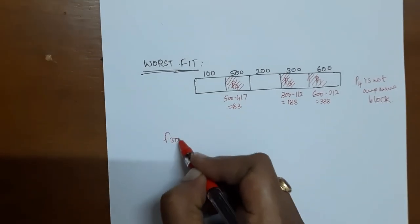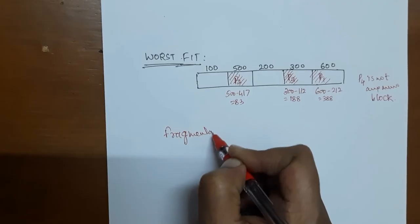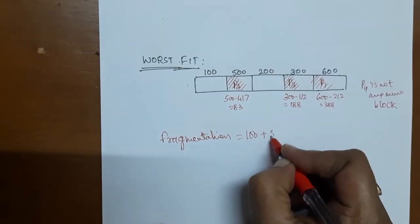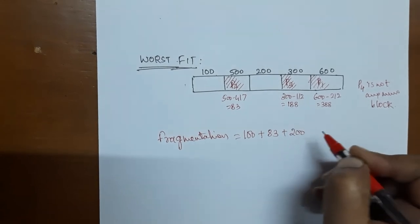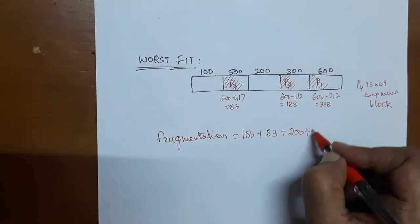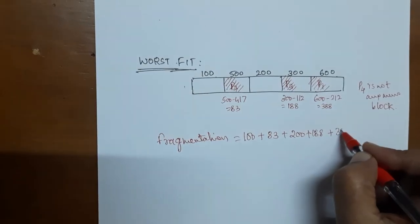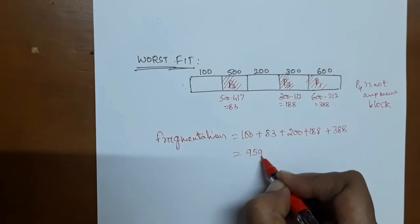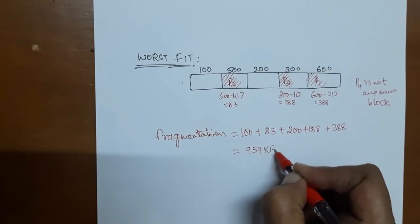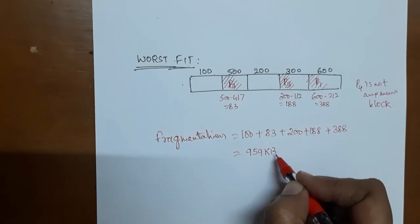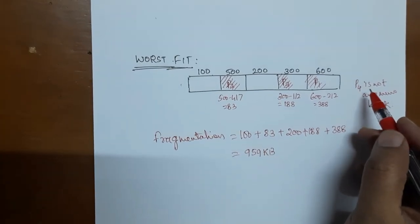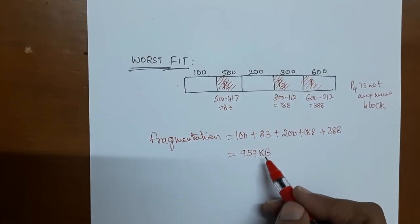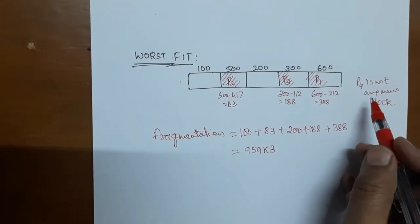Now to calculate total leftover memory — fragmentation: the first block is completely free at 100 KB, plus a small hole in the second partition of 83 KB, the third partition is 200 KB free, the fourth partition has a hole of 188 KB, and the fifth partition has a hole of 388 KB. Together, total fragmentation is 959 KB. The memory required for P4 is 426 KB, so even though this memory is available as fragments, the required contiguous partition is not allocated.